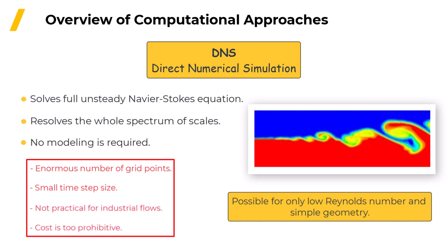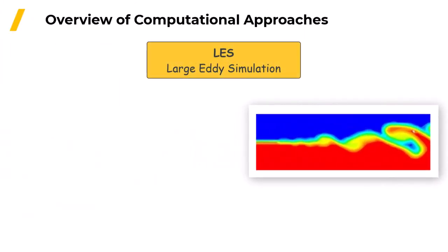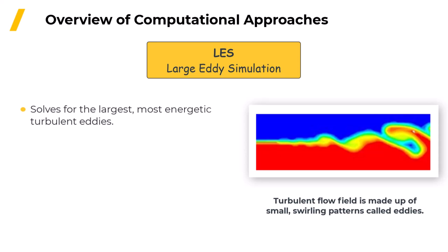As a consequence of this, in order to actually be able to do a turbulent flow simulation, you have to use a turbulence model and different modeling approaches exist. One is called large eddy simulation or LES. A turbulent flow field is made up of small swirling patterns known as eddies. The idea behind LES is to directly solve for the motion of the largest, most important eddies and model the effect of the smaller eddies.